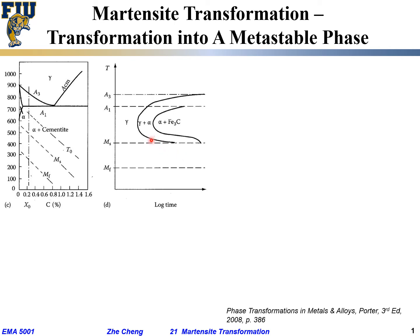The transformation on the TTT diagram goes from gamma on the left to gamma plus alpha, and eventually to alpha plus cementite. If we cool relatively slowly, we go from gamma to alpha and then eventually form alpha plus cementite. On these types of TTT diagrams, temperature-time represents our cooling curve.